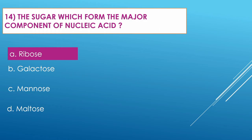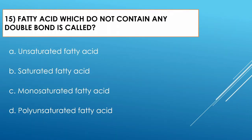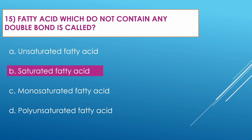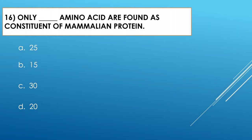Question number fifteen: Fatty acid which does not contain any double bond is called — Option A: unsaturated fatty acid. Option B: saturated fatty acid. Option C: monounsaturated fatty acid. Option D: polyunsaturated fatty acid. The correct option is option B, saturated fatty acid.